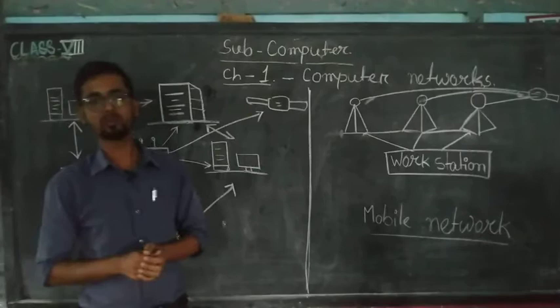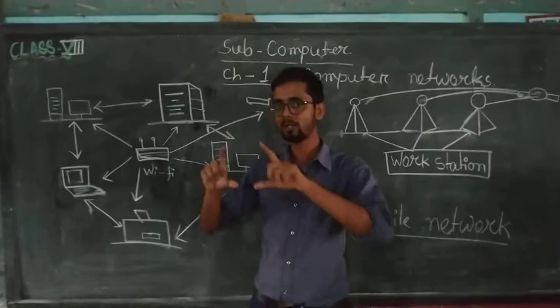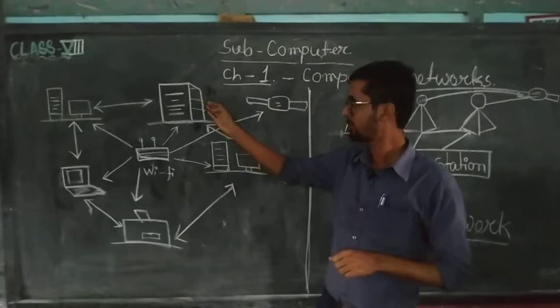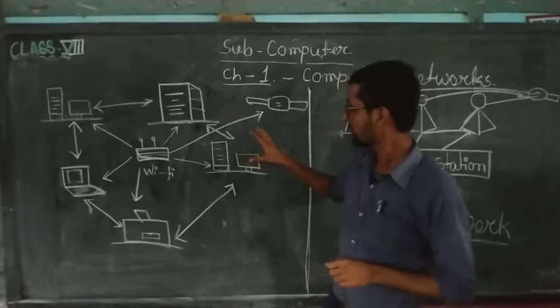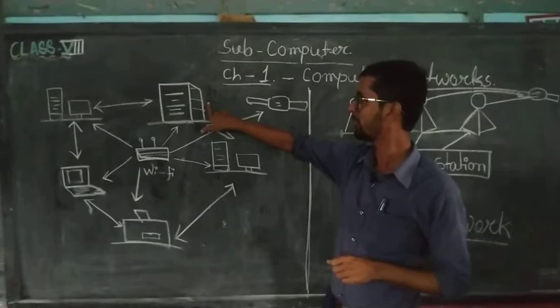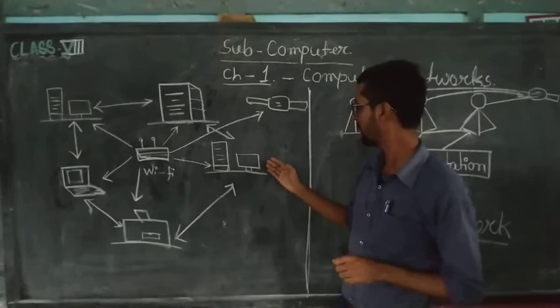So, computer network means what? That there are so many computers in one particular area in an office or in a bank or in a lab. But, there is a fixed server room. By this server room, all computers are connected. There is a cable between them. And, all these cables are connected to the server. So, whenever we need any data or we have to share any file to each other.